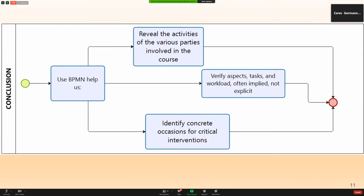About our conclusion, the use of BPMN helps us to develop the activities of the various areas involved in the course: teachers, students, and technological platform. Verify aspects, tasks, and workload often implied, not explicit. Identify and define concrete occasions for critical interventions: when to provide specific, individual, and encouragement feedback, and which data to support that is available for teachers and from the platform. And the clarification of the process that occurred enables us to design strategies to promote self-regulation and co-regulation. Identify the period's intervention, their opportunity, and the parties they involve.